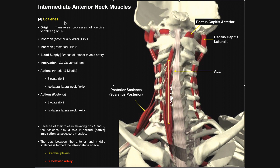All three scalenes — anterior, middle, and posterior — all insert on a rib. However, the posterior scalene is the only one that inserts on rib two. The insertion is a little farther down than rib one, which is visible here; the posterior scalenes actually insert on rib two.